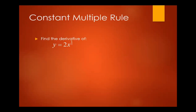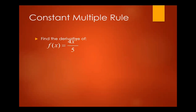Constant multiple rule example: Y equals 2X to the power 1 third. Transfer the constant outside: 2 times 1 third, X to the power 1 third minus 1 equals negative 2 thirds. The final answer is 2 thirds X to the power negative 2 thirds, which becomes 2 over 3X to the power 2 thirds. Another: 4X squared over 5 — transfer the constant outside, giving a final answer of 8 fifths X.